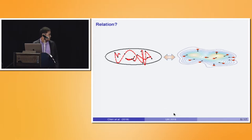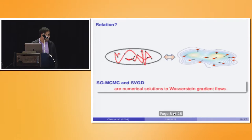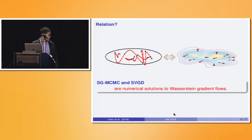These two figures summarize the characterization of these two algorithms, and we can see that they are quite different. The question is: what is the relationship between them? In our paper, we show that SGMCMC and SVGD are actually numerical solutions to what is known as Wasserstein gradient flows.